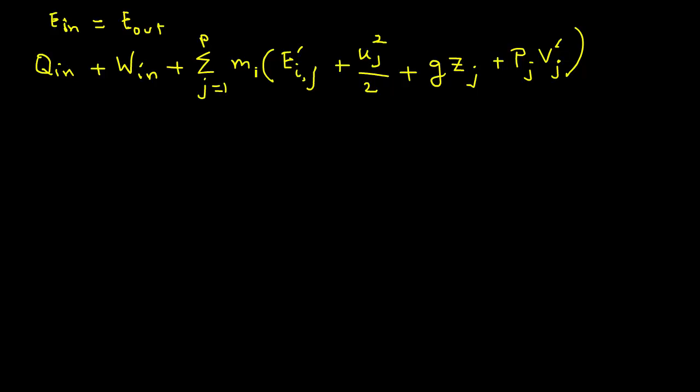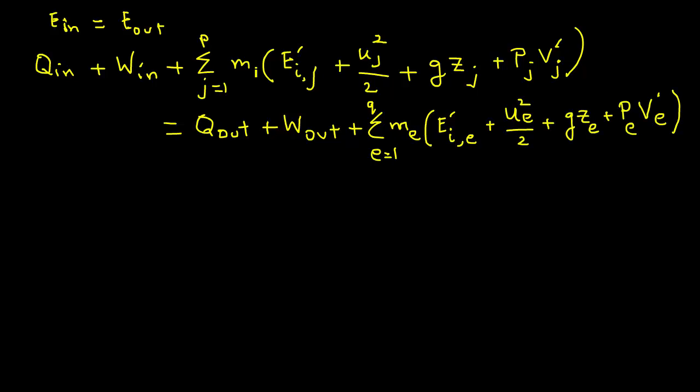So this equals Q out plus W out, again summation of E equals 1 to Q, ME in parentheses, E prime I comma E, plus UE square divided by 2, plus GZE, plus PE times VE prime, end of parentheses.